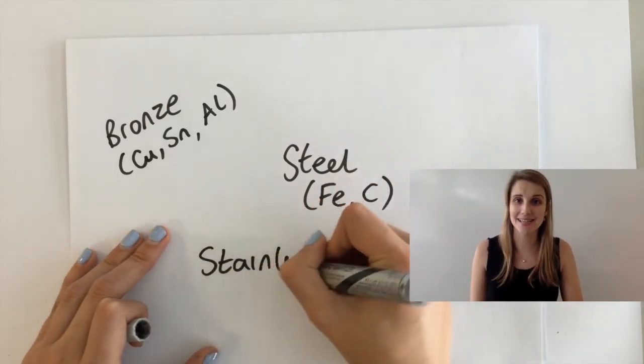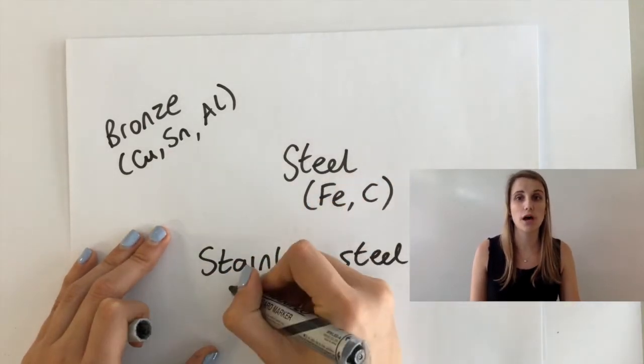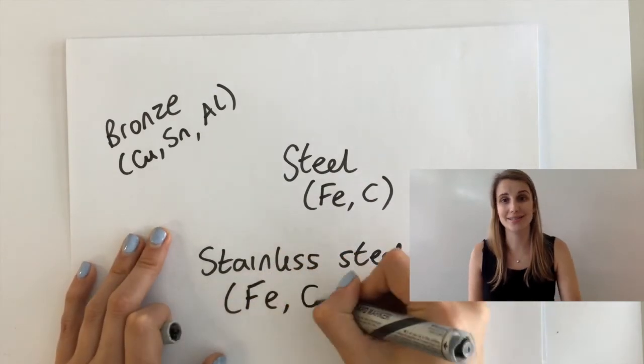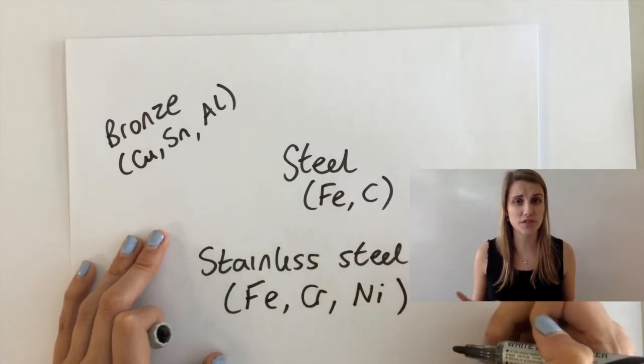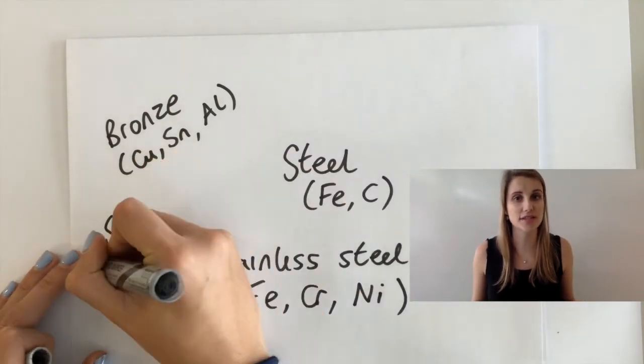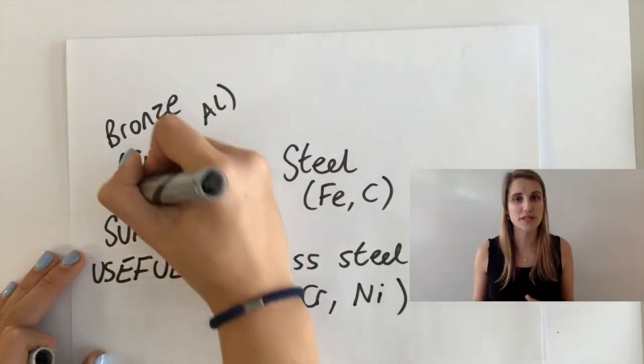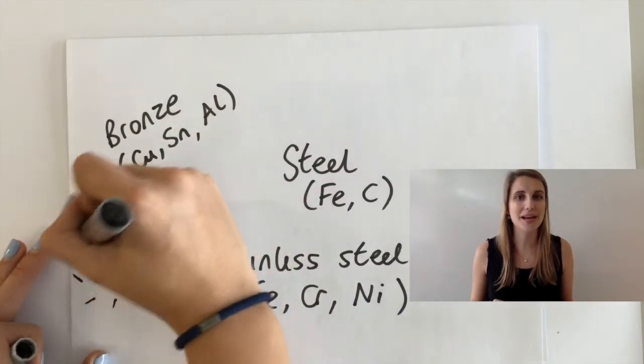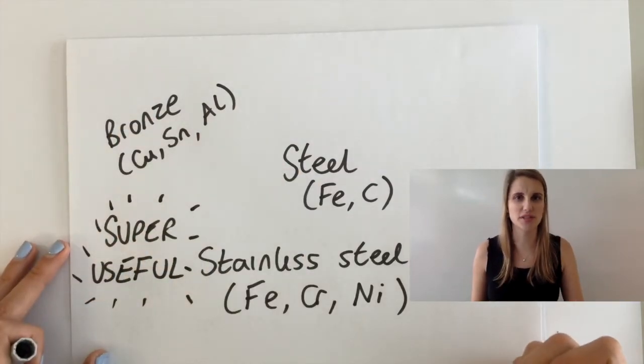Even things like stainless steel is an alloy made from iron, chromium, and nickel. There are loads of examples of alloys all used for completely different things, but it means that the properties of the alloy are completely different from the metal's properties originally.